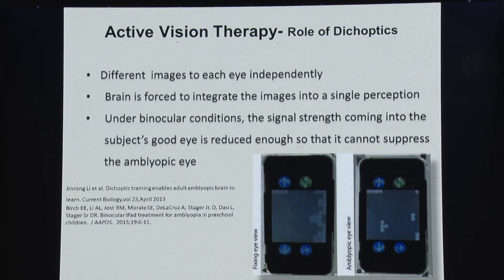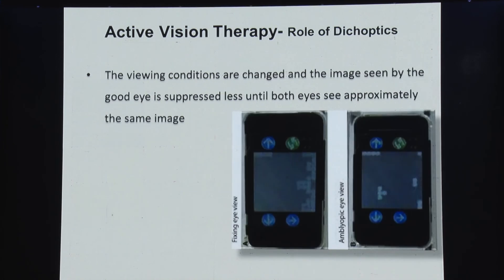Another form of active vision therapy is dichoptics, which involves binocular stimulation where each eye is presented with a different image and the brain is forced to integrate those images into a single image. This improves binocular interaction. In this approach, the signal strength to the good eye is reduced so that the amblyopic eye takes precedence, and the viewing conditions are adjusted until both eyes see approximately the same image.